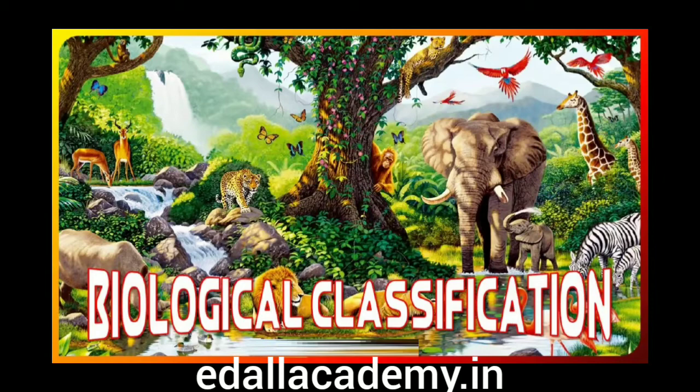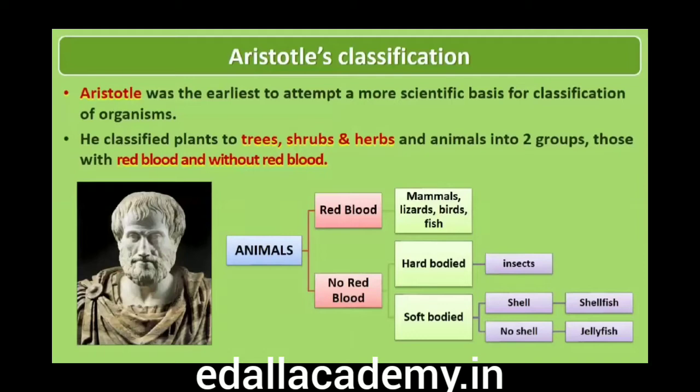Since the dawn of civilization, there have been many attempts to classify living organisms. It was done instinctively, not using criteria that were scientific, but born out of a need to use organisms for our own use — for food, shelter and clothing. Aristotle was the earliest to attempt a more scientific basis for classification. He used simple morphological characters to classify plants into trees, shrubs and herbs, and divided animals into two groups: those which had red blood and those that did not.